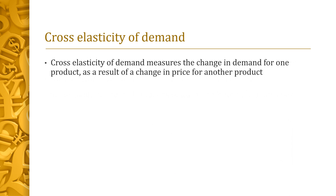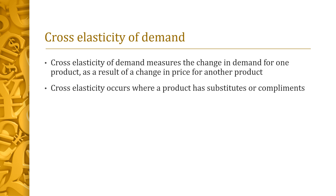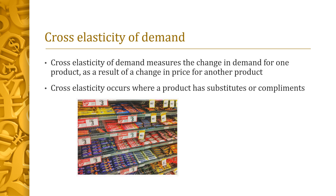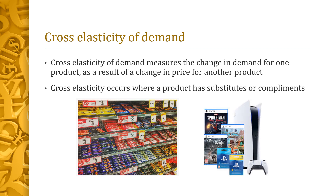Cross elasticity of demand measures the change in demand for one product as a result of a change in price for a different product. Cross elasticity occurs where a product has substitutes or complements. Substitutes are the next choice of product a consumer might buy — if you go to buy a chocolate bar, there will be many substitutes to choose from. Complements are products that go along with another product; for instance, PlayStation games are a complementary product to the PlayStation console.